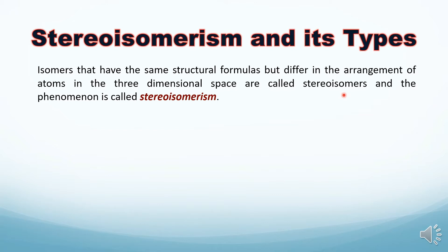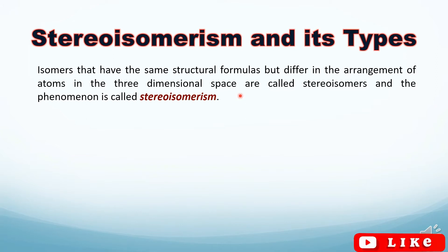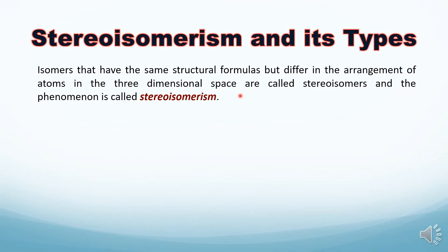In the last lecture we studied about structural isomers, which can be explained by drawing in two dimensions — on a whiteboard or on paper. But stereo isomers can only be properly described in three-dimensional space. Because a whiteboard or paper is two-dimensional, we have devised different methods to describe stereo isomers on a plane of paper, which I will discuss in the next lectures.